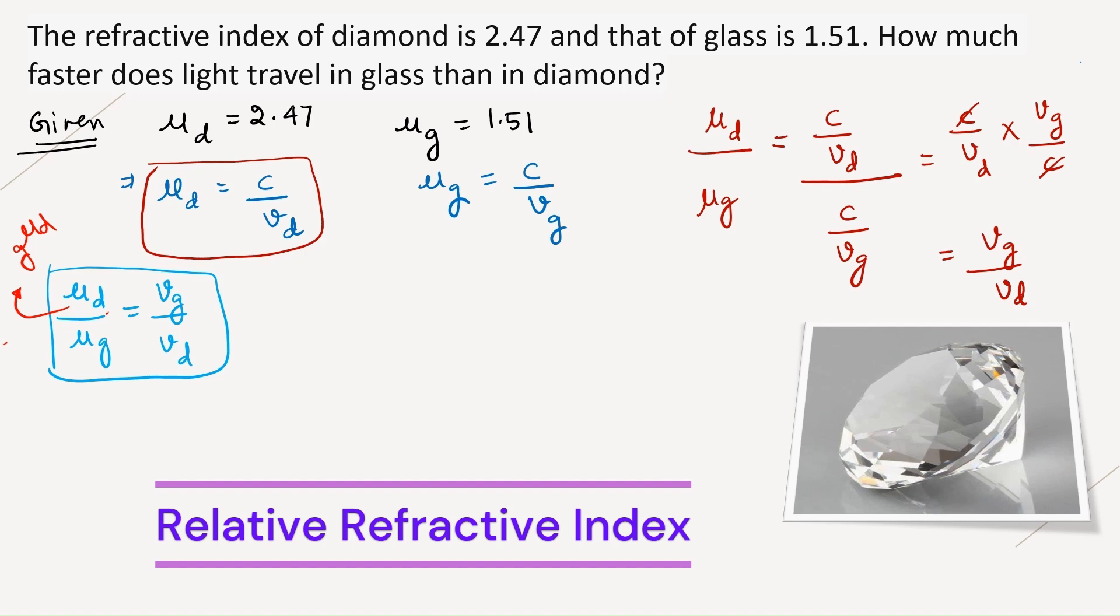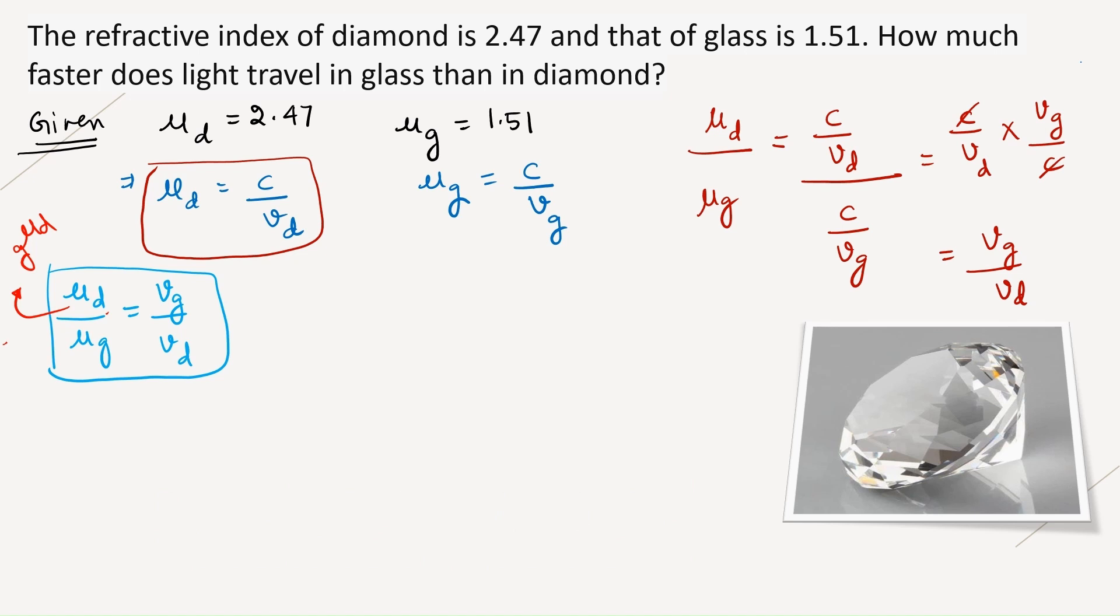Let us complete this question. What are we supposed to do? They are asking velocity of glass. Let us keep glass on one side and take Vd to the other side. So what do we get? Vg equals mu d by mu g into Vd. Mu d is 2.47 and mu g is 1.51 into Vd.